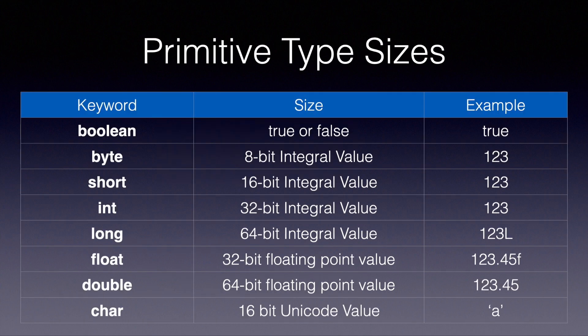Here are the eight different primitive types. Let's start from the top. The very first is the boolean type. A variable defined of boolean type can only store two values: it can either store true or it can store false. It cannot store any other value — it cannot store zero or one or anything apart from true or false.